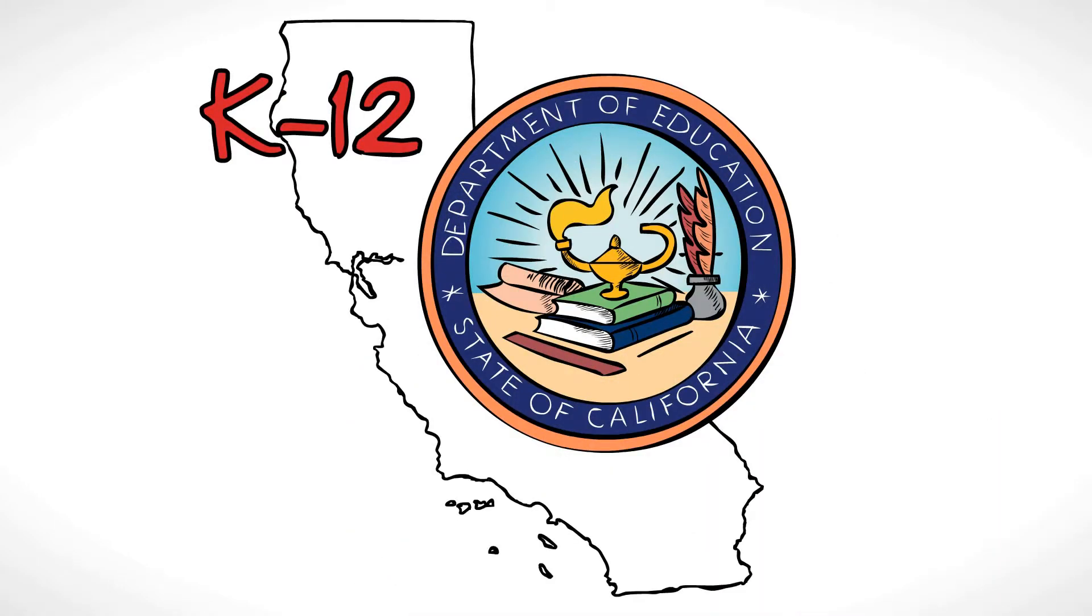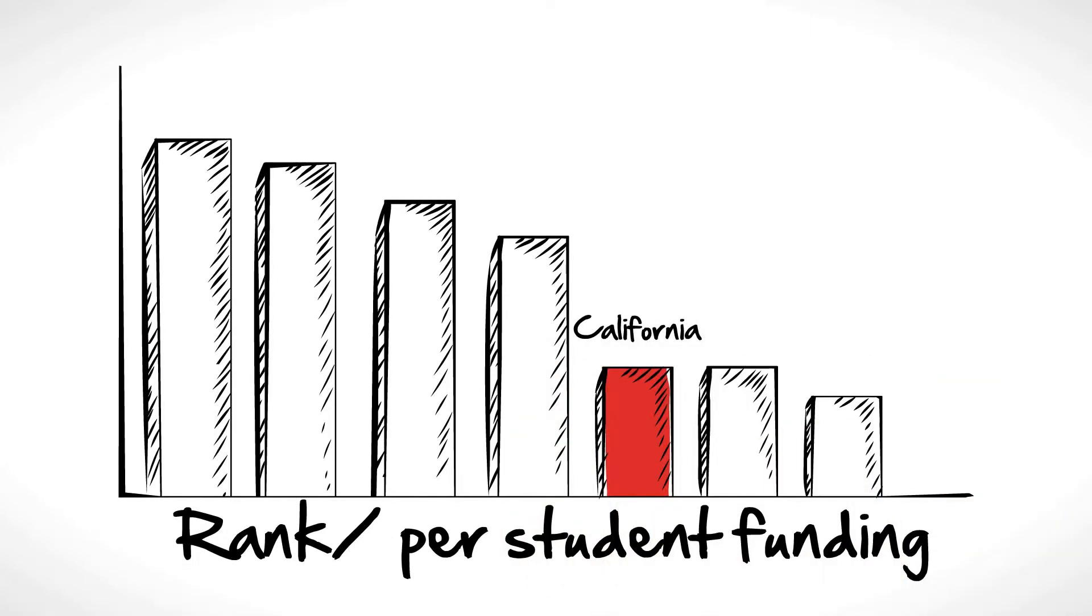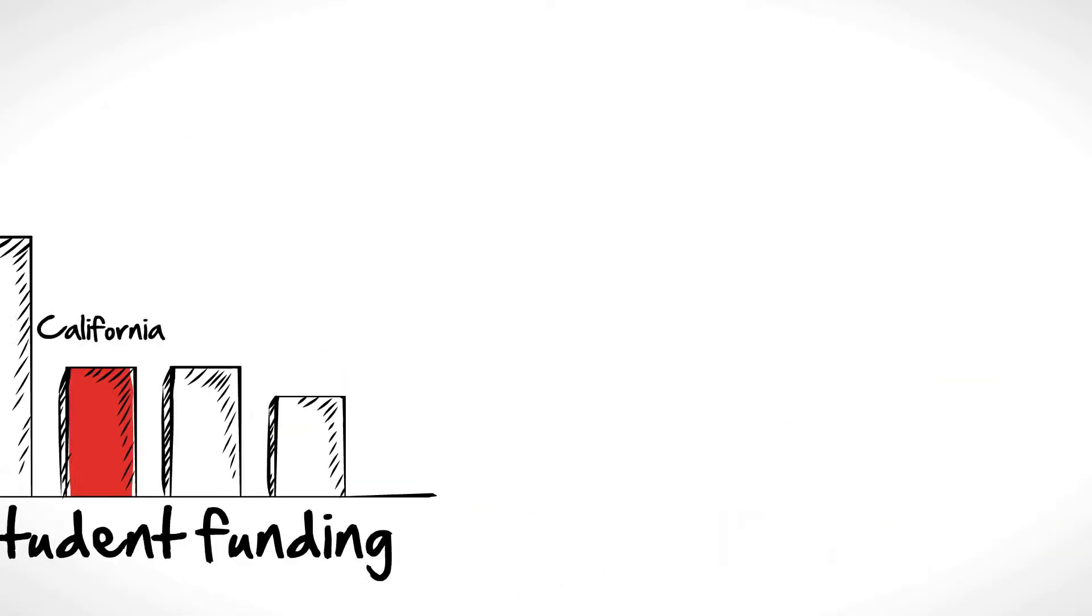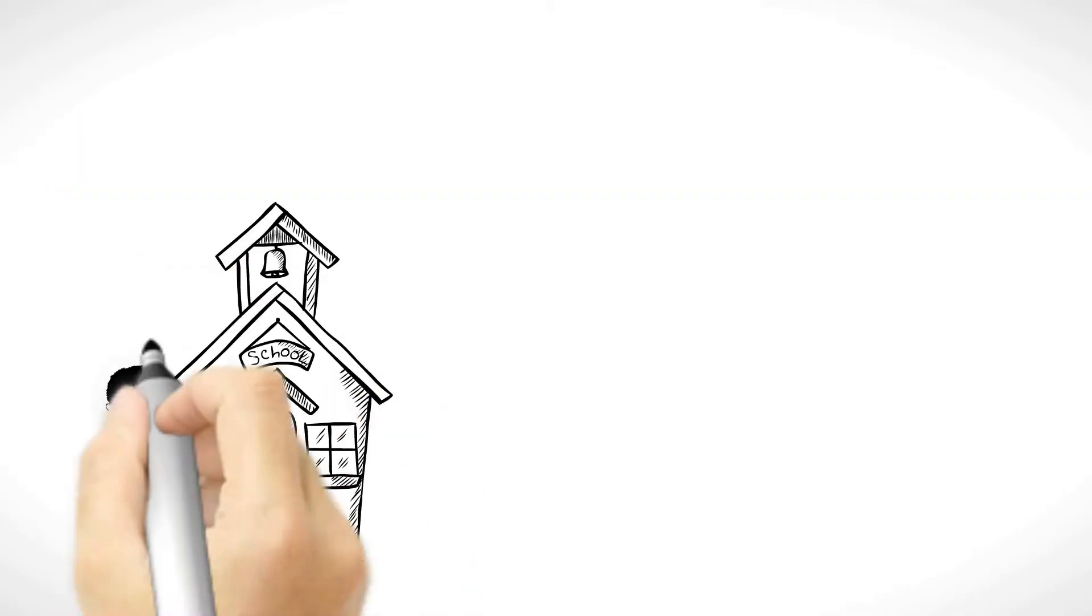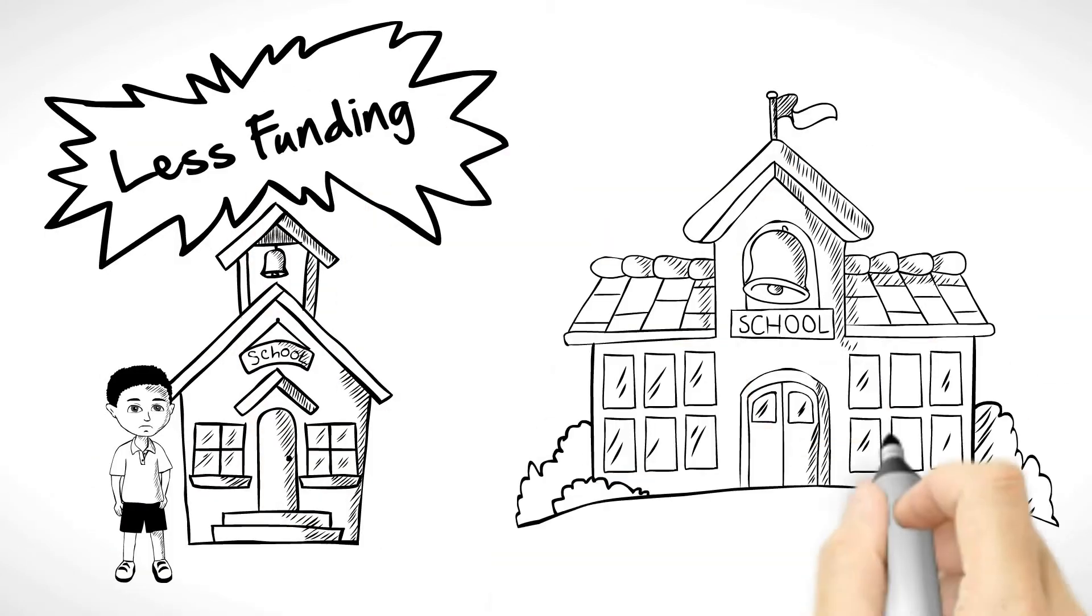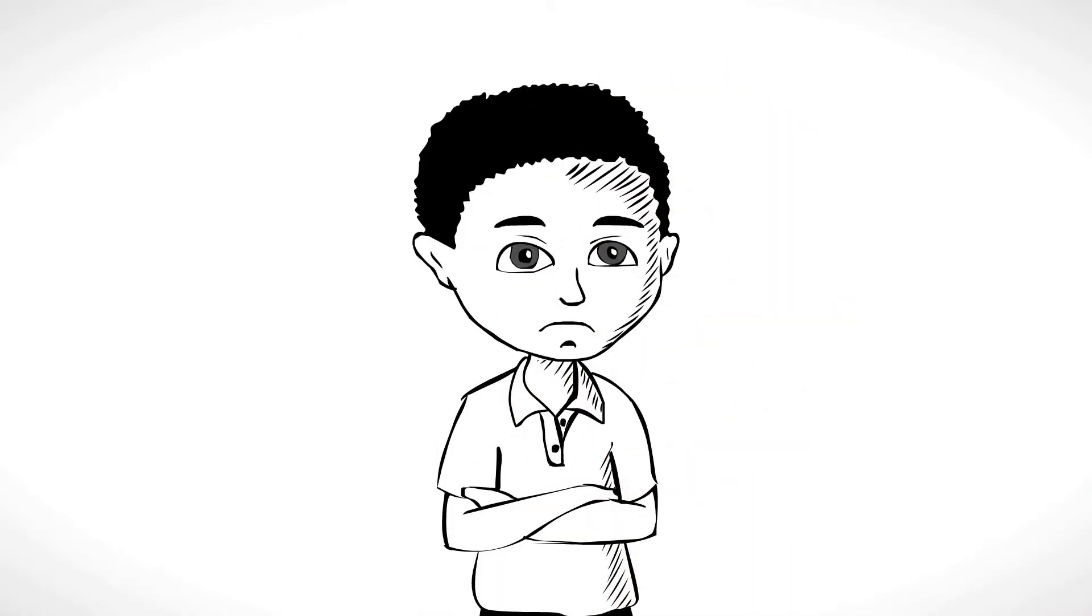K-12 education in California is in crisis. Not only does California rank near the bottom in per-student funding, and spending has been drastically cut, but students in low-income schools receive less funding than kids in well-to-do neighborhoods. This is not fair. This is not right. We can do better.